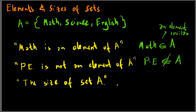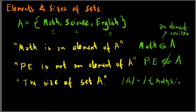The size of a set is the number of elements present inside it. For set A containing math, science, and English, the size — also called cardinality — is equal to 3. That is how we determine elements and how to get the size or cardinality of a set.